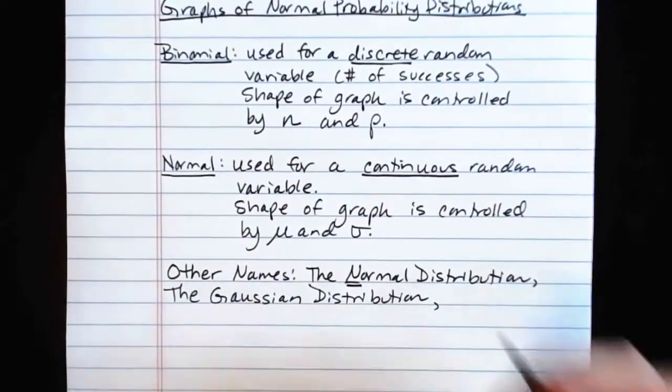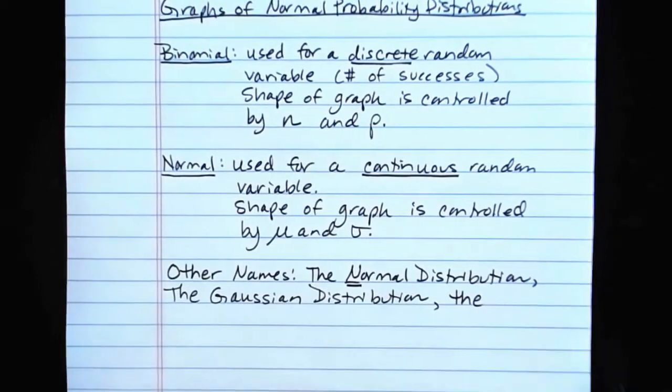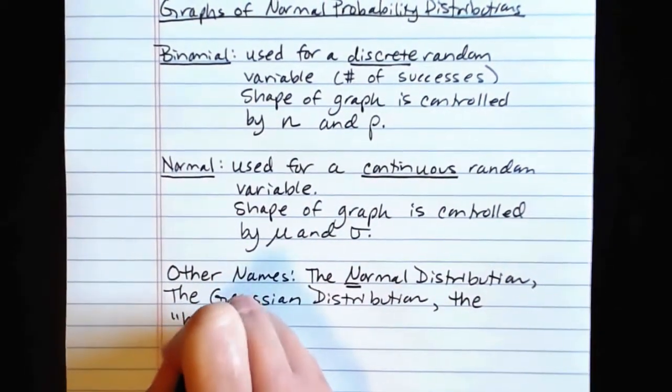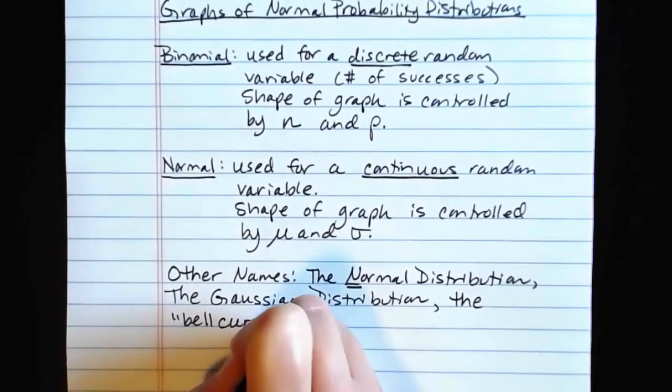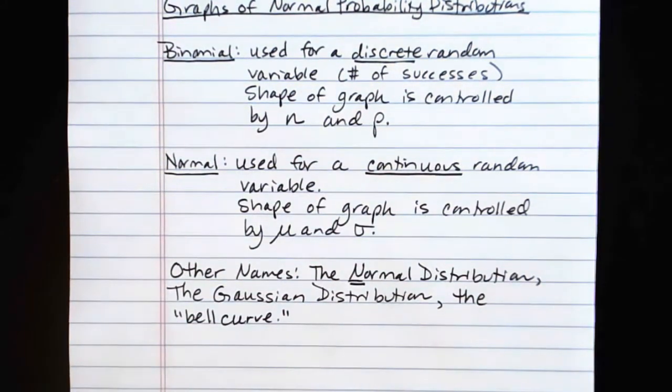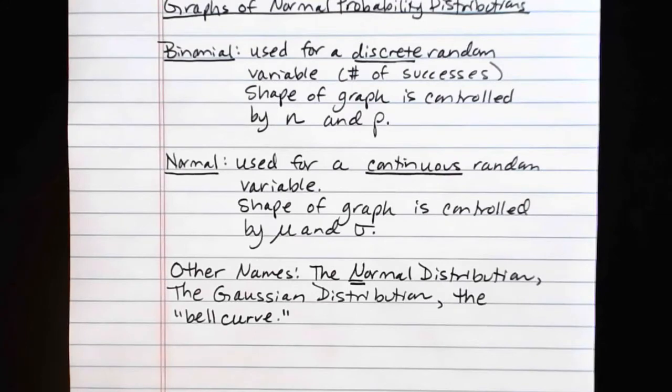Or the kind of informal name that you frequently hear it referred to as is as the bell curve. So if you've ever been in a class where you've been studying things that follow a bell curve, what you were talking about was the normal distribution, whether or not anybody mentioned that at the time.